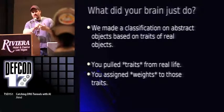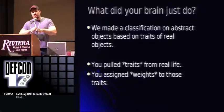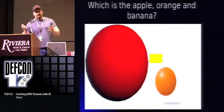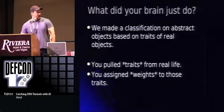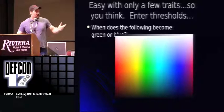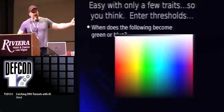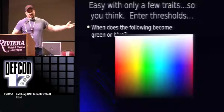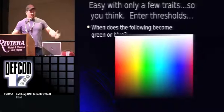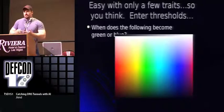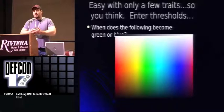You assigned a weight to those traits — you said one is much more important than the other. That's how your brain works: you took an abstract concept and pulled the weights and traits out of it. We're going to talk about traits and weights a lot. Color is actually more complex than it looks, because what if we asked you when does green end and when does blue start? Everyone has a different opinion on that. That's where thresholding comes in — your personal threshold of when green becomes blue.